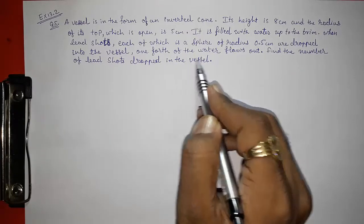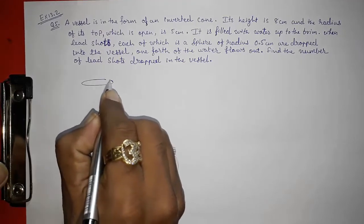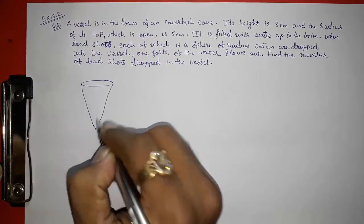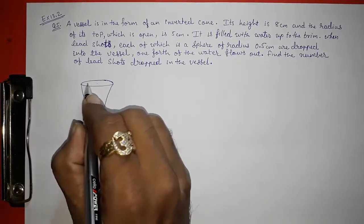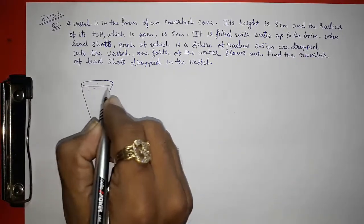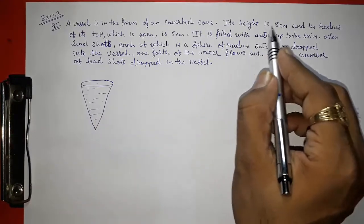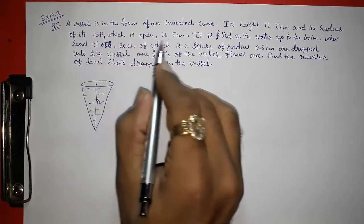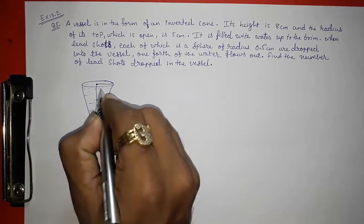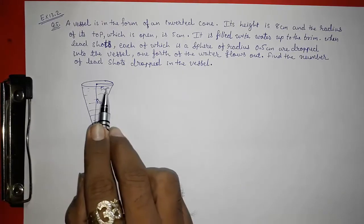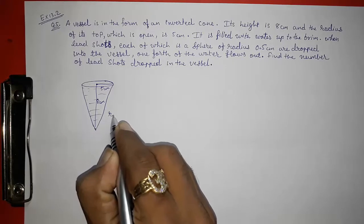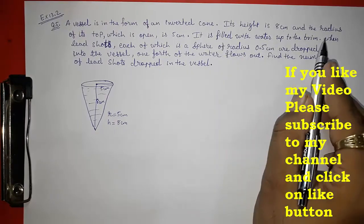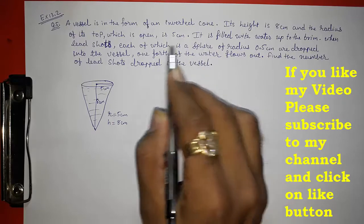We need to find the number of lead shots dropped in the vessel. We are having a vessel which is in the shape of a cone. Look here — this is a cone, it is filled with water up to the brim, meaning the whole cone is filled with water. Its height is 8 centimeters, so h = 8 cm, and its radius which is open is 5 centimeters, so r1 = 5 cm.